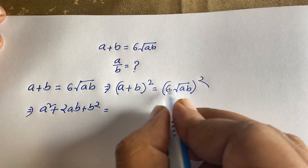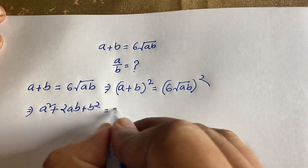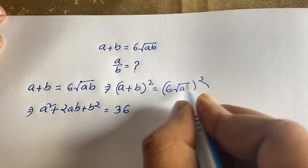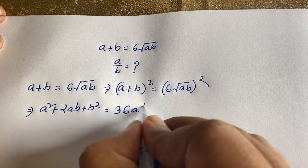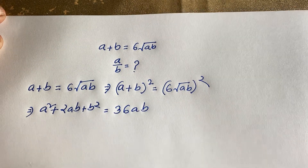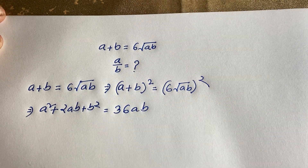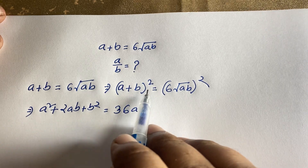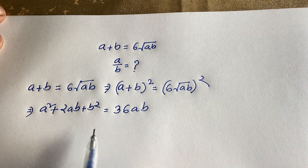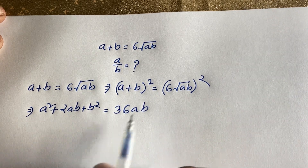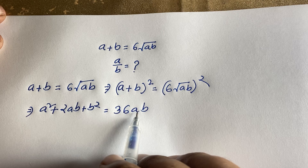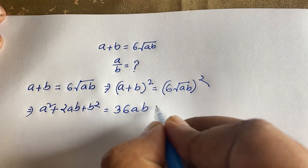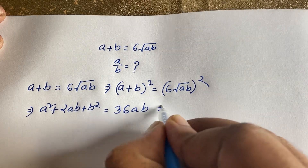On the right side, 6 squared is 36, and the square root cancels, giving us 36ab. So we have a² + 2ab + b² is equal to 36ab.